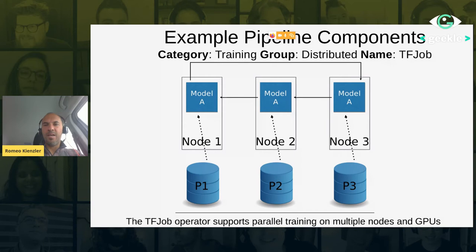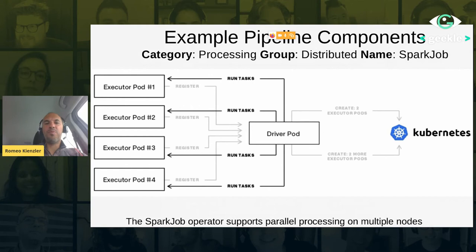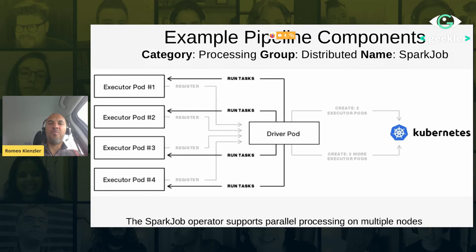Another interesting type is the Spark Job. You can make Apache Spark a first-class citizen in Kubernetes using the Spark Job on top of Kubeflow. You just define the amount of parallelization and the Spark Job component takes care of distributing your workload. The very cool thing is you can mix and match Spark and TensorFlow stages — that means you have a parallel Spark job for data preprocessing, and afterwards a parallel TensorFlow job for deep learning model training.